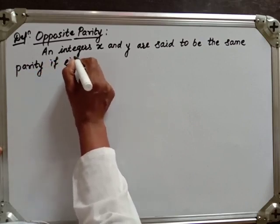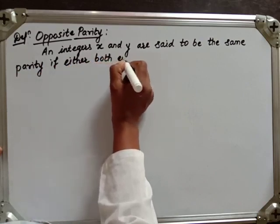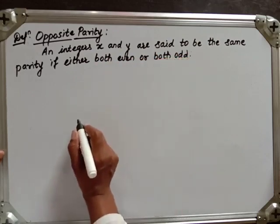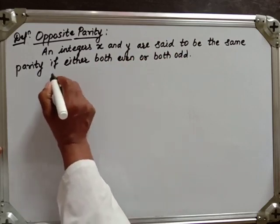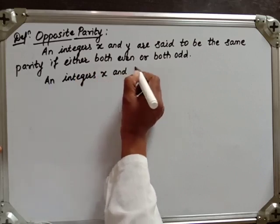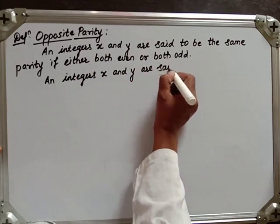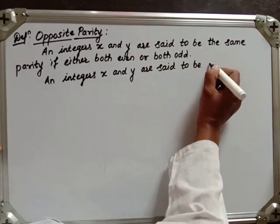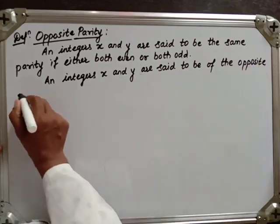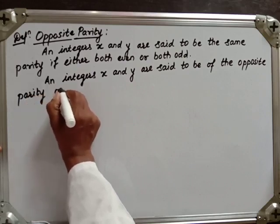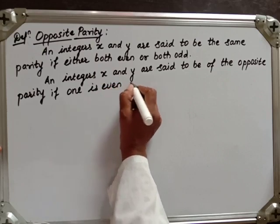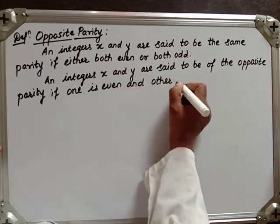Integers x and y are said to be of the same parity if either both are even or both are odd. If either both even or both odd, they are known as being of the same parity. Integers x and y are said to be of opposite parity if one is even and the other is odd.